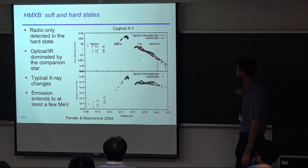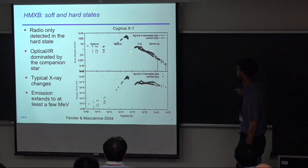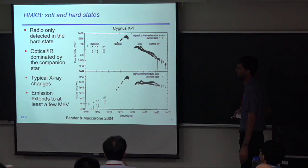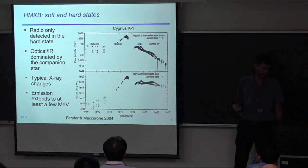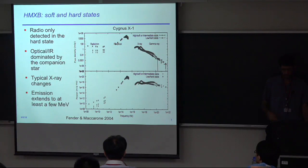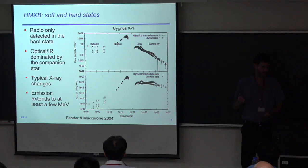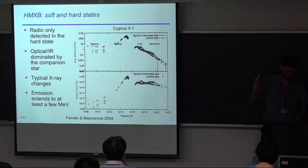The third thing is the typical changes I showed in detail in the previous talk: in the hard state you have the thermal component at lower energies and a hard power law, then in the soft state the thermal component moves up in energy and you have a softer power law. The fourth thing is that this extends into the gamma-ray band — Cygnus X-1 has been seen up to at least 3 MeV and probably more than 10 MeV, and there's even evidence we've detected it with Fermi LAT starting at 100 MeV. So Cygnus X-1 really has emission across the spectrum from radio to real gamma rays.